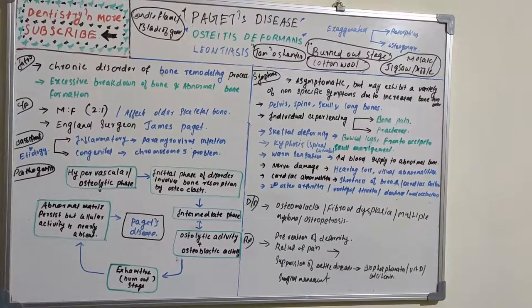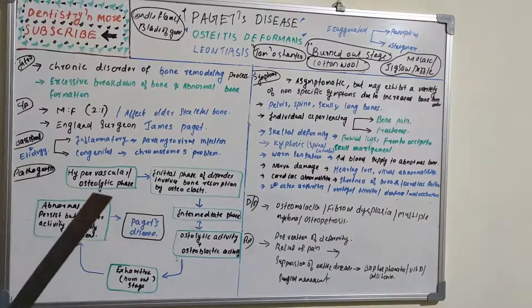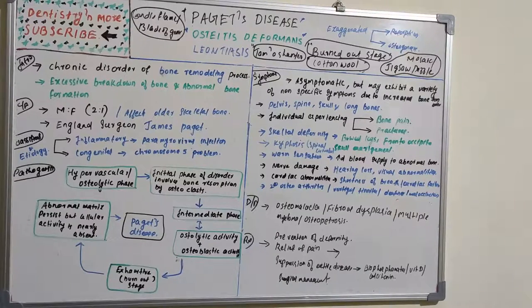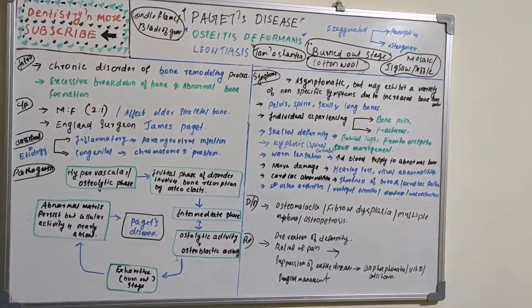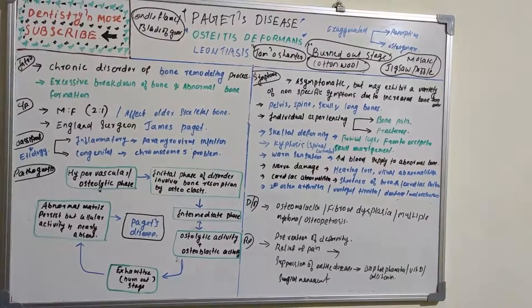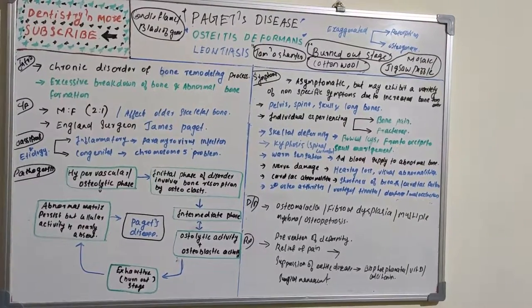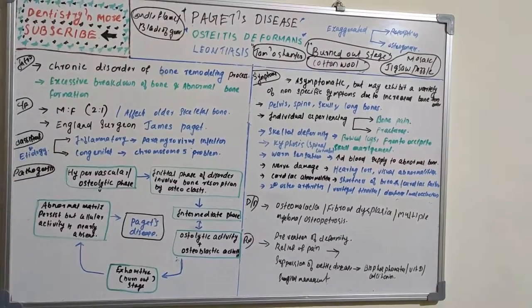The differential diagnosis includes osteomalacia, fibrous dysplasia, multiple myeloma, and osteopetrosis. In terms of treatment, surgical management is used for deformity. Pain relief and suppression of active disease can be achieved using bisphosphonates, vitamin D, and calcitonin. Paget's disease, also known as Osteitis Deformans or Leontiasis, results from improper osteoblastic and osteoclastic activity causing bone deformation and abnormal bone formation.